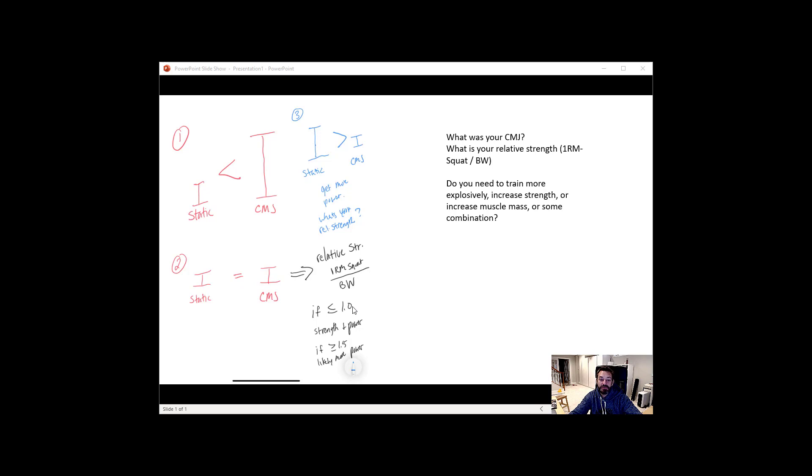If the ratio is less than one then you likely need more strength as well as power training. But if you're really strong and I just picked 1.5, so this would be a scenario where someone can squat one and a half times or more their body mass, then it's likely they need to train explosively and that they have sufficient strength but have not been doing any explosive training.